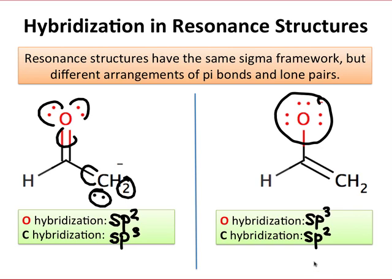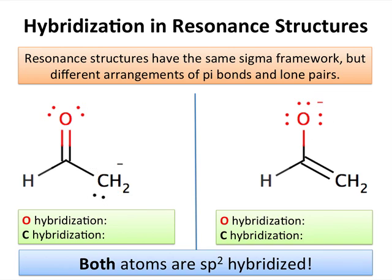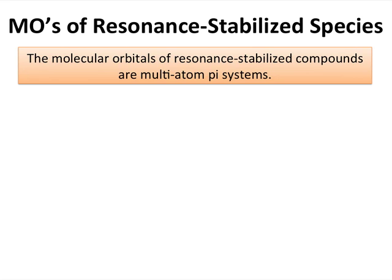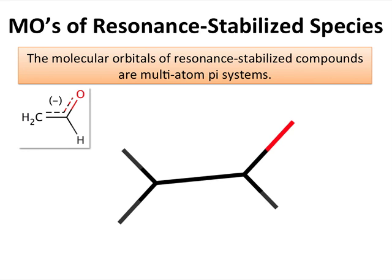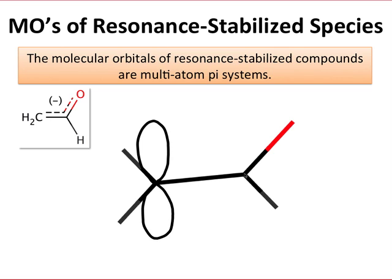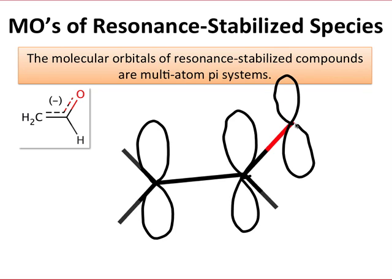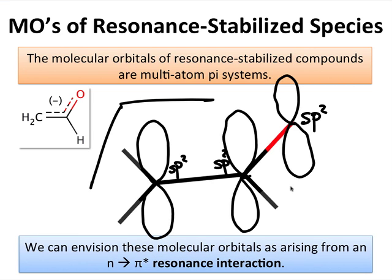Believe it or not, the real situation is that both the oxygen and the carbon are sp2 hybridized. The lone pair corresponding to the anionic center in the enolate of acetaldehyde prefers to be in a p-orbital rather than an n-orbital. Placing the lone pair in a p-orbital allows us to imagine the molecular orbitals of the enolate as a three-atom pi-system, constructed from three 2p orbitals all parallel with one another and all three perpendicular to the molecular plane. We can also envision these molecular orbitals as arising from an n-to-pi-star resonance interaction, where a filled non-bonding orbital on either the terminal oxygen or terminal carbon interacts with the unfilled pi-star orbital between the carbons or between the central carbon and oxygen.